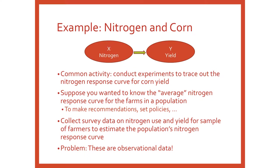I'm going to go through an example to illustrate the problem — back to corn and nitrogen. This pops up a lot in the real world. You do experiments to trace out the nitrogen response curve for corn yield to nitrogen. But say you want to get at the average nitrogen response curve for farmers in a population — in southern Wisconsin, what does that response curve look like for the whole population, so you can make recommendations or set policies? That's an exaggeration — hopefully you don't put in 350 pounds of nitrogen on your corn.